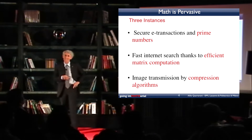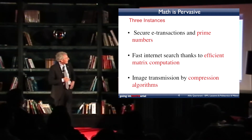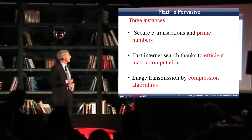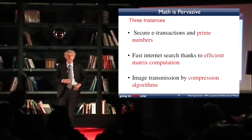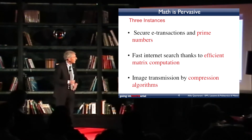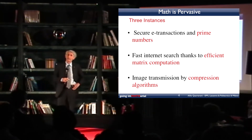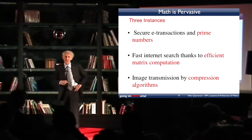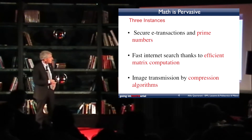Math is very pervasive in our society. Here are three examples. If you want secure transactions through e-banking or using your Visa card, you need special devices and criteria driven by very sophisticated mathematical algorithms. Surprisingly, these algorithms are based on number theory — perhaps the most abstract branch of mathematics — and specifically on the factorization of prime numbers, which non-mathematicians consider completely useless.